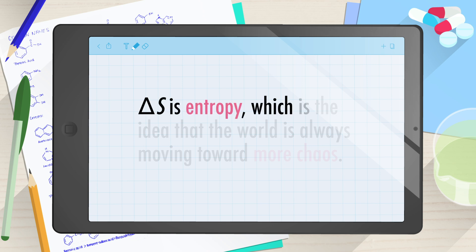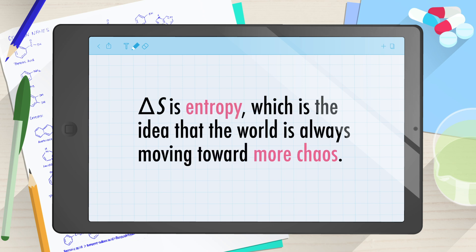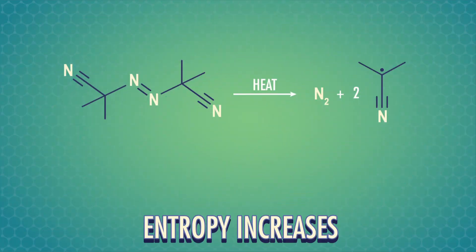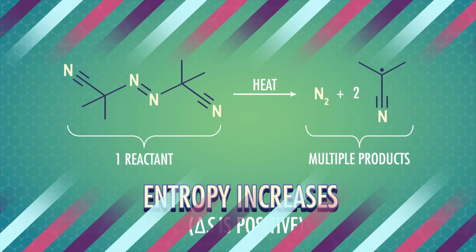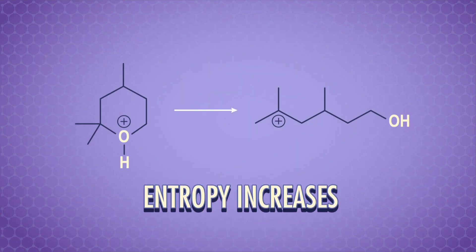Second, delta S is entropy, which is the idea that the world is always moving towards more chaos. Entropy explains why a sugar cube dissolves in tea, or why a marching band needs to work hard to keep a sharp formation, instead of dissolving into a random, noise-making crowd. For example, entropy increases and delta S is positive when one reactant splits up into two products, or when a ring compound opens up into a more wiggly chain.